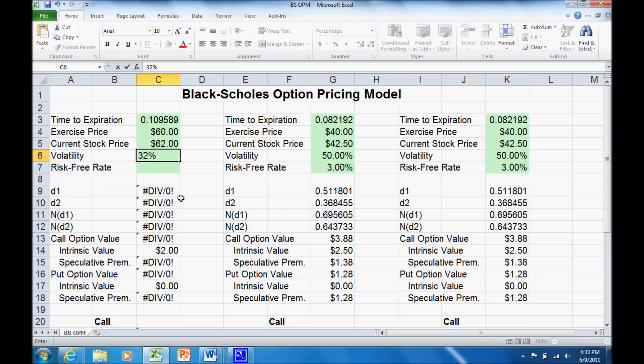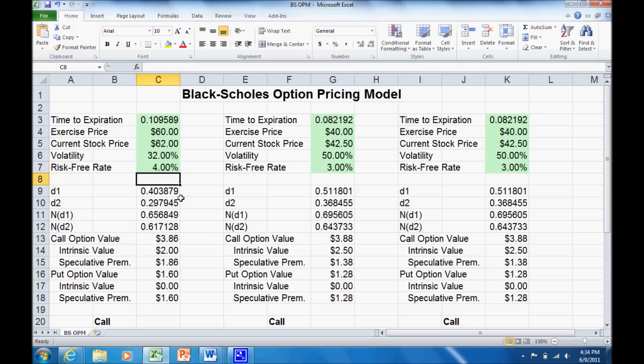That's automatically formatted. If you were doing the Black-Scholes model by hand, you'd want to make sure that was in as a decimal. But the spreadsheet is set up to automatically put that in as a percentage. Risk-free rate, 4%. And now it goes through and does all those calculations for us.